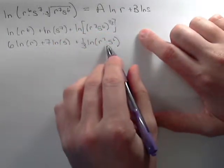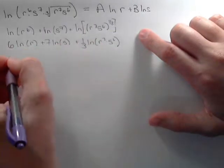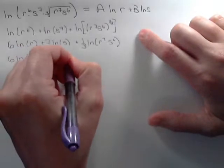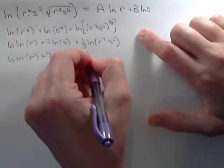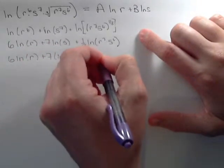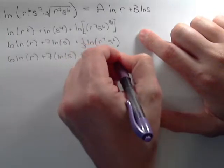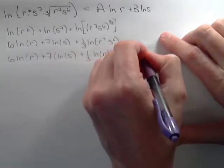Notice here we have another product of logs, so we can separate that. So this is 1 third natural log of r to the 7th plus 1 third natural log s to the 6th.